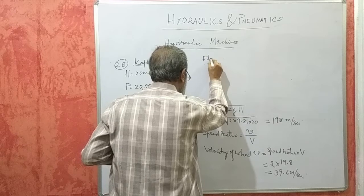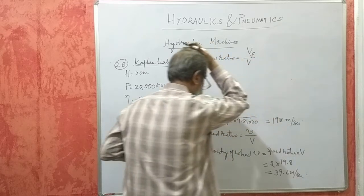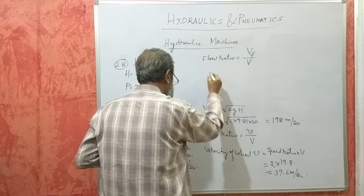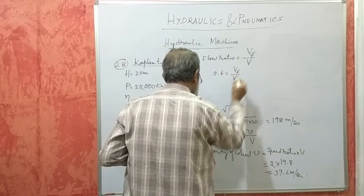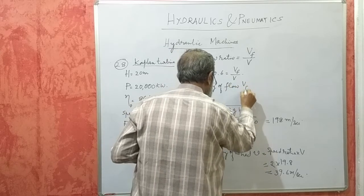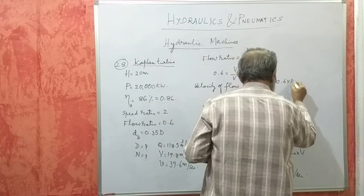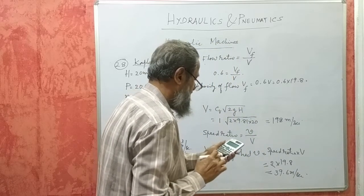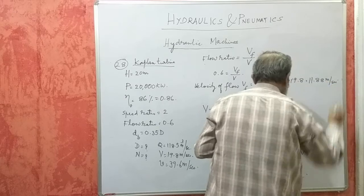Now, flow ratio stands for Vf by V. Vf means velocity of flow, it is the vertical component of this capital V. Flow ratio 0.6 is equal to Vf by V. So velocity of flow Vf will be equal to 0.6 into 19.8, that gives me 11.88 meters per second.